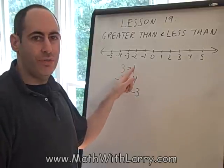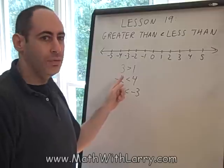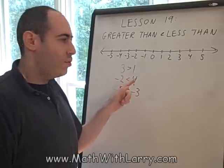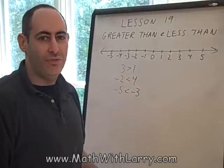In this case, since 3 is greater than 1, the alligator's mouth opens that way. Since 4 is greater than negative 2, or since negative 2 is less than 4, we would write it like this. The alligator's mouth is opening to the 4.